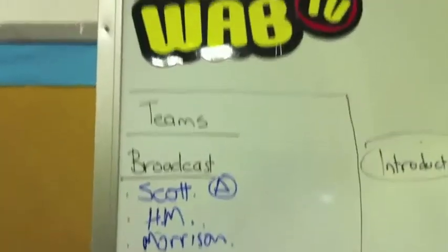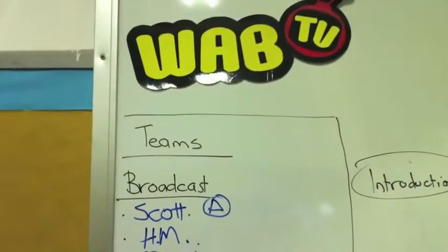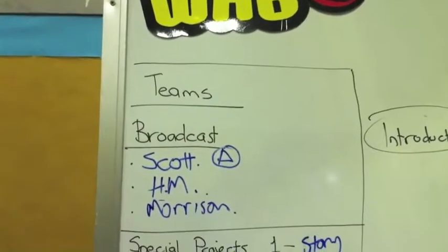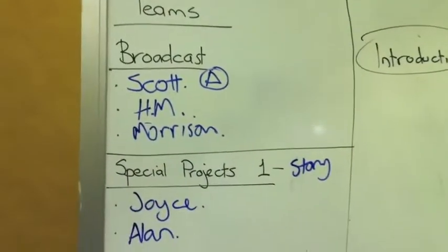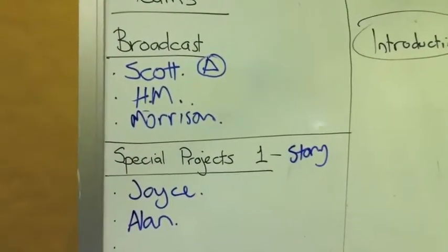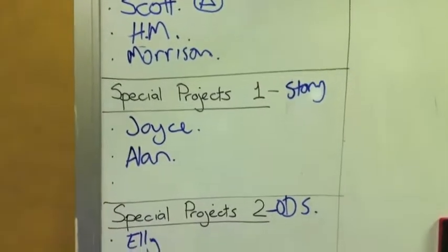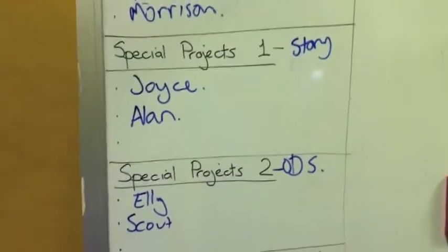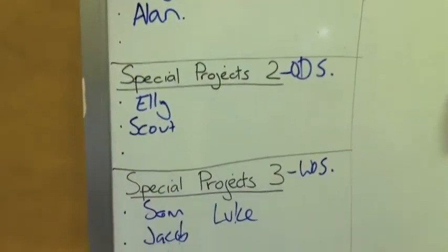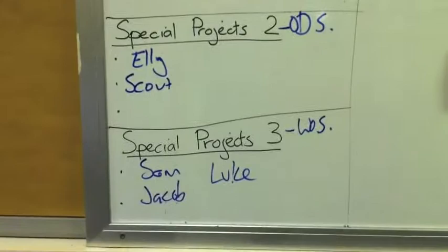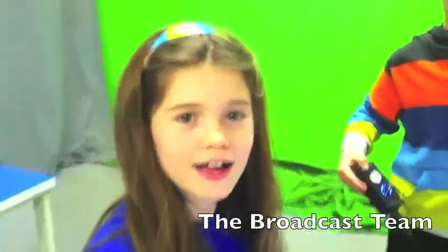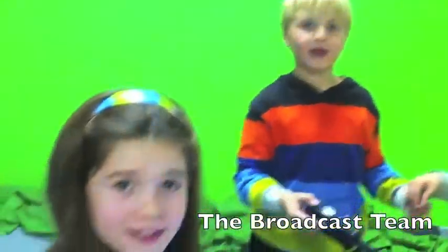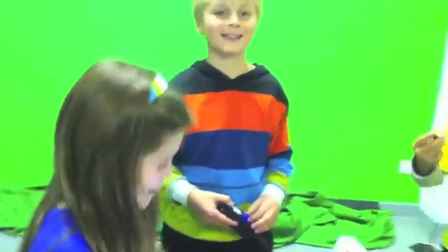The crew is divided up into different teams: the broadcasting team, which includes the anchors who write the script as well as the camera operator who films them. The rest of the crew are broken up into special projects, working on recording segments like Word on the Street or editing footage taken at different events. We're just setting up the camera and the script for WAB TV.